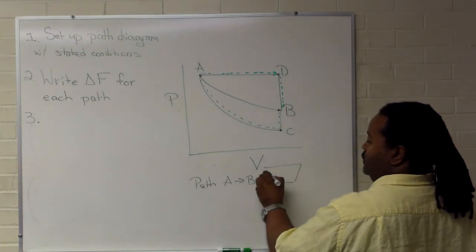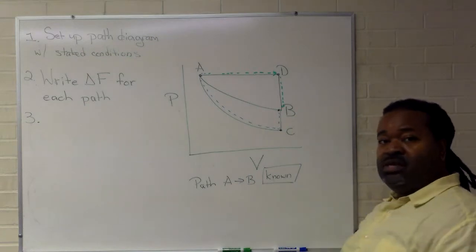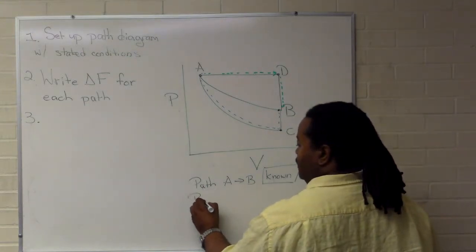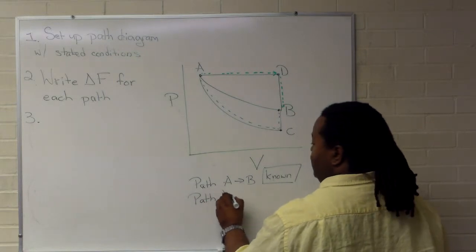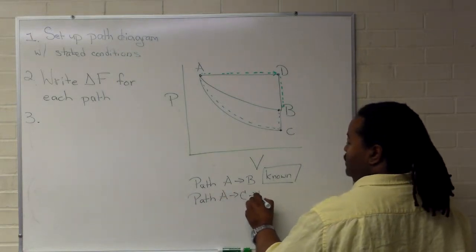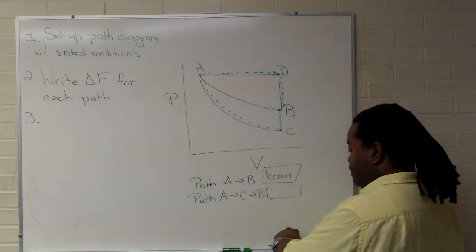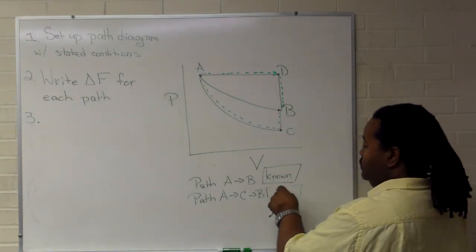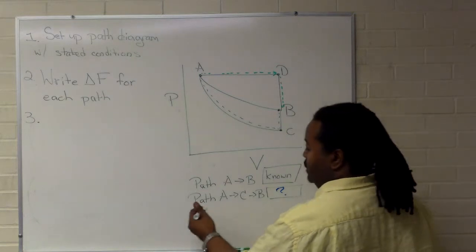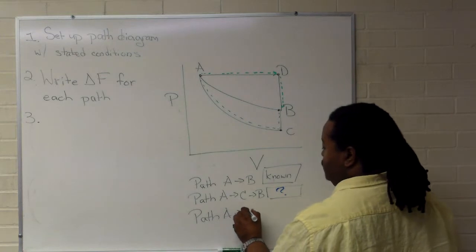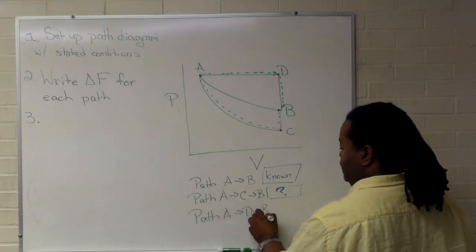So that's some known thing. And now what we're attempting to define are the other paths, A to C to B. And we're going to want to compare that one. And path A to D to B.